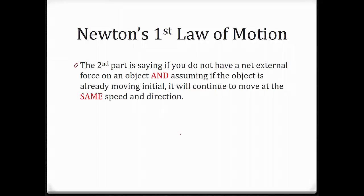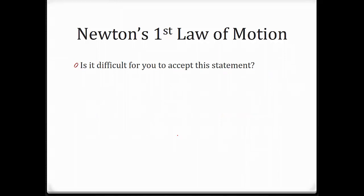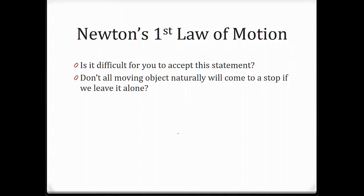The second part says that if there is no net external force on an object, and if the object is already moving initially, it will continue to move at the same speed and direction. This implies that if there's no net force on a moving object, it will actually continue to travel at the same speed and direction forever. Is it difficult to accept this? Don't all moving objects naturally come to a stop if we just leave them alone?